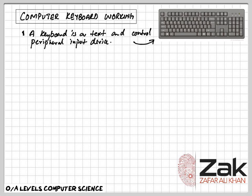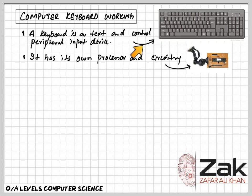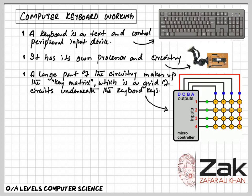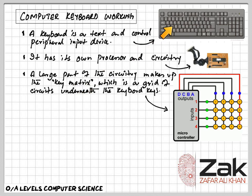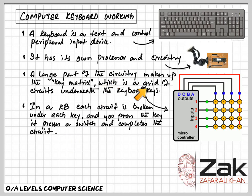Every keyboard has its own processor and circuitry, called the keyboard controller or keyboard processor. A large part of the circuitry makes up the key matrix, which is a grid of circuits underneath the keyboard keys. All the keys we press have a circuit underneath, as shown in this diagram. This whole circuitry is called the key matrix. Under every key there is an incomplete circuit, and all of those combined make the key matrix.